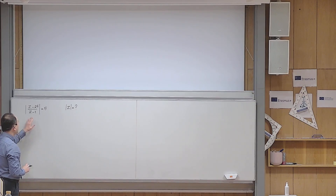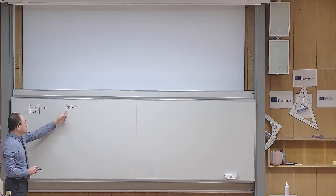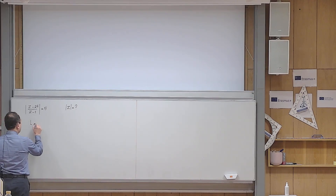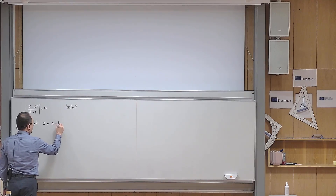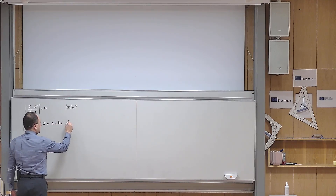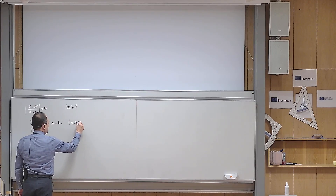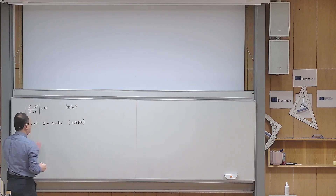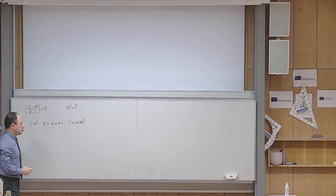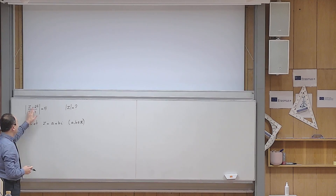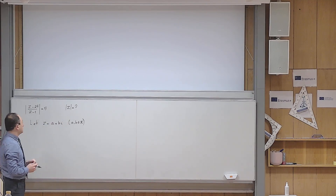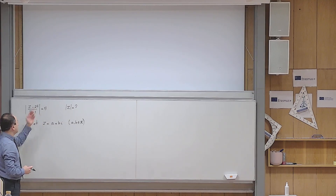One very natural way of solving problems like this is to let z be a complex number in standard form: a plus bi. I'm assuming that a and b are real, and because z is a complex number it can be written in this form for some unknown a and b. So I use this equation to find what is wanted, and I plug this into the equation.